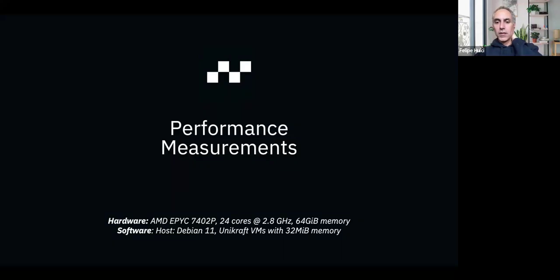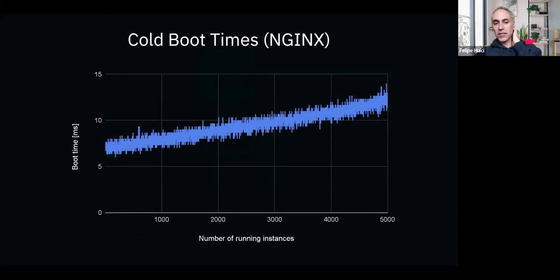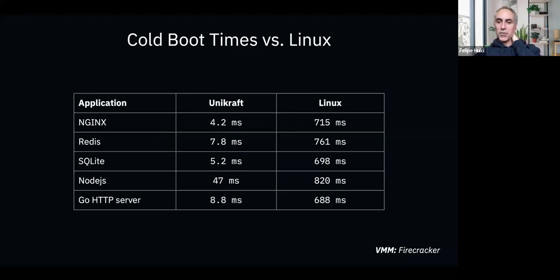We did performance measurements. For cold boot times with an nginx image, we booted one instance, measured it, left it running, started a second, measured that, and so on up to 5,000 instances. It's relatively stable between 5 and 15 milliseconds. Other applications like Redis, SQLite, and Node.js show similar values — Node.js is heavier at around 50ms — still an order of magnitude faster than Linux using Alpine trimmed down as much as possible.